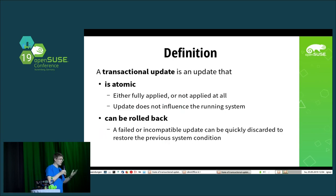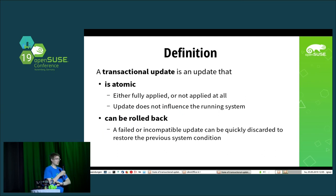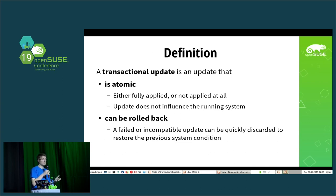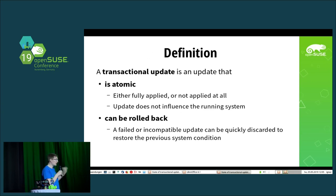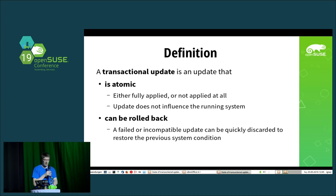Several distributions, not only OpenSUSE, provide transactional updates — or atomic updates, as they're occasionally called — which all share the same definition. A transactional update has to be atomic: it either has to be fully applied or not applied at all. The update must not influence your currently running system; you don't want services restarted during the update. The second criteria is that the update can be rolled back, which we already have with our current snapper and zypper implementation.